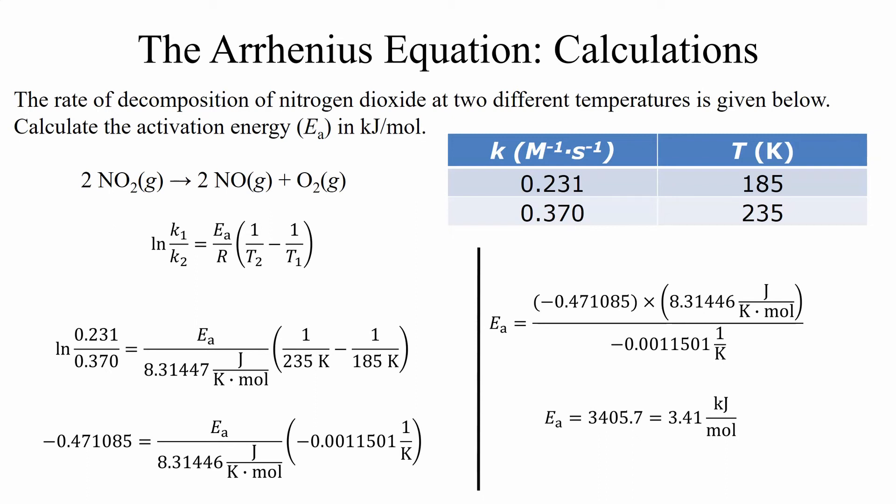Now, you may notice one thing. We didn't bother putting in the units for the rate constant. Well, that's because they cancel each other out. And then, of course, we take the natural log of them. So anything that you take the natural log of is going to become unitless.